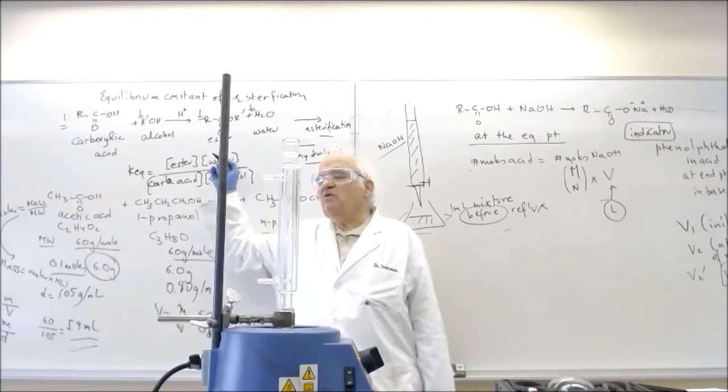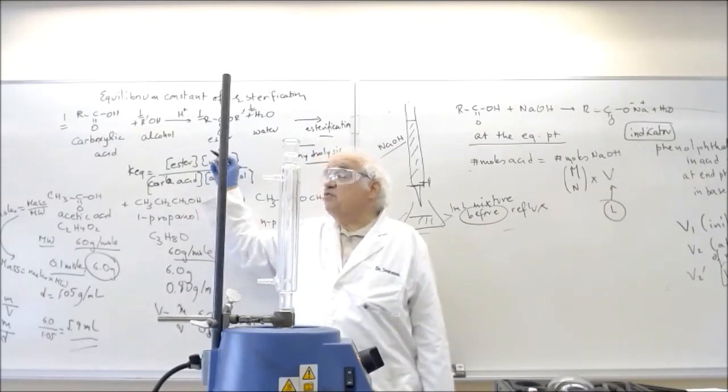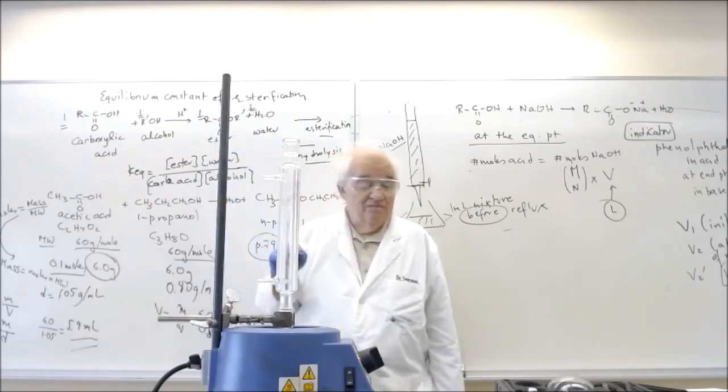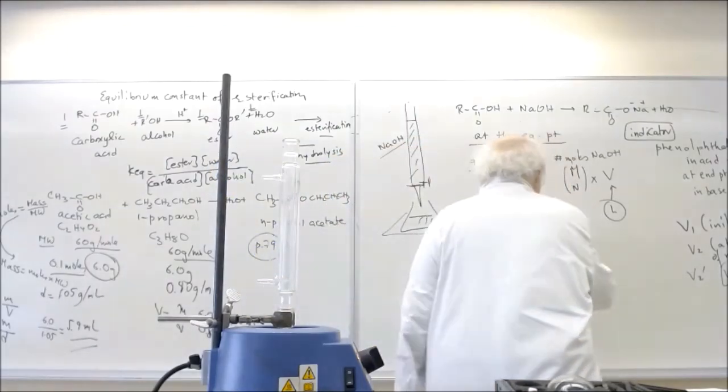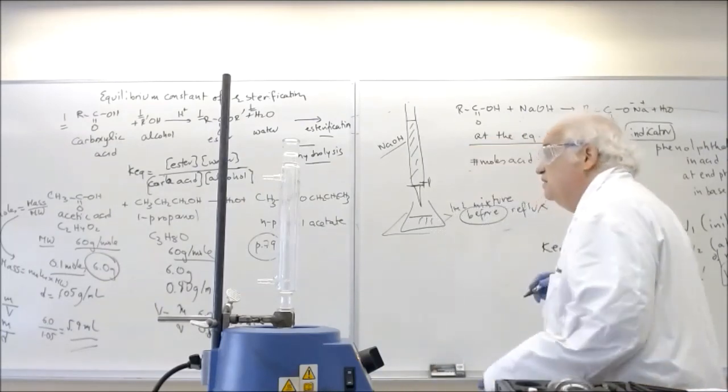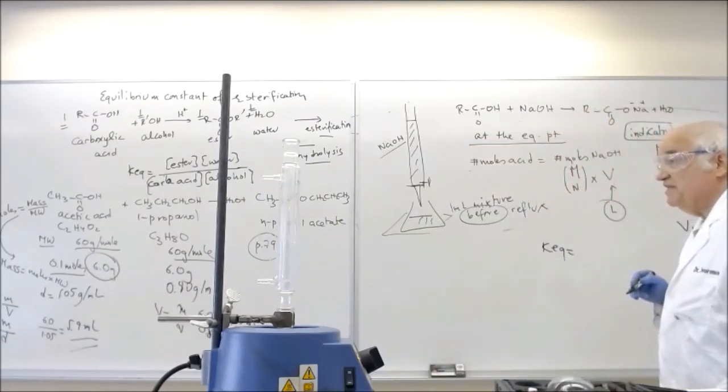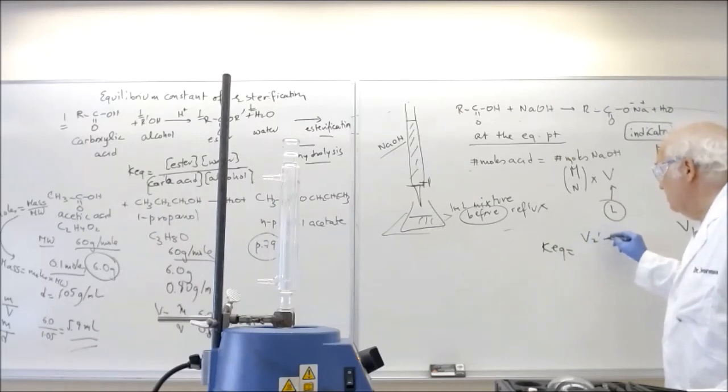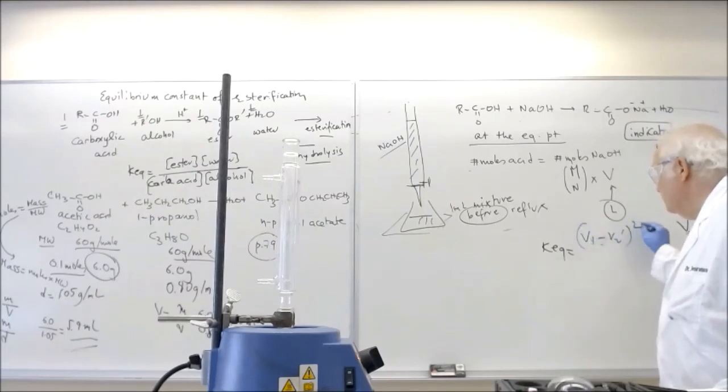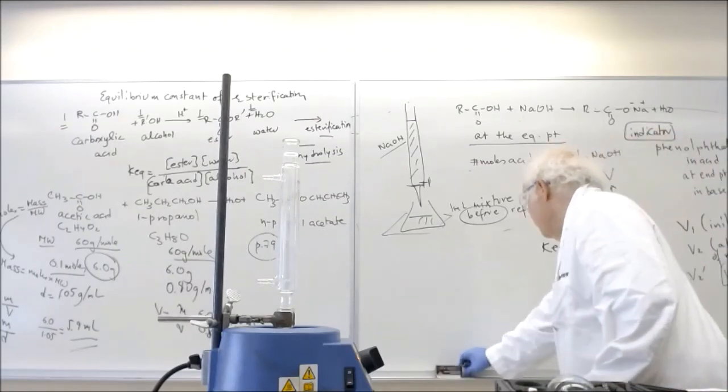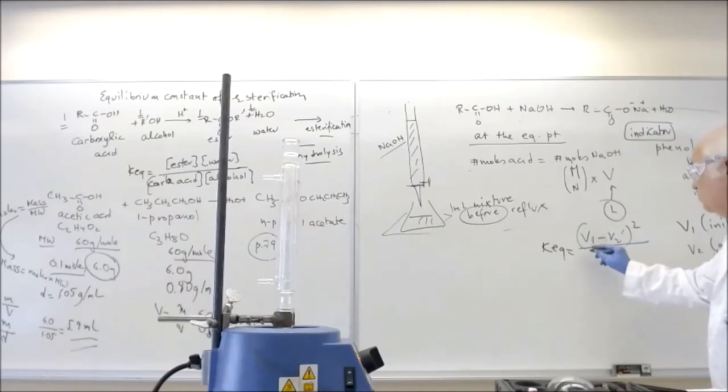And so therefore what is going to happen then is you are going to, you can use the volumes instead. So K equilibrium will be equal to the amount of ester that you form, which is going to be V1 minus V2 prime, all squared, over the amount of acids left over, which is equal to V2 prime squared.